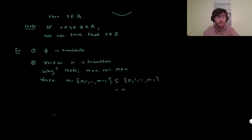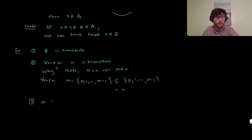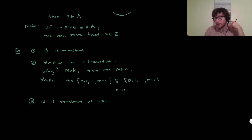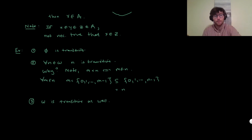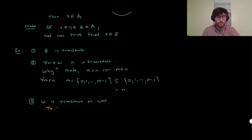The third point is that ω itself is also transitive. We'll actually give a more formal argument for this, which we'll prove later.